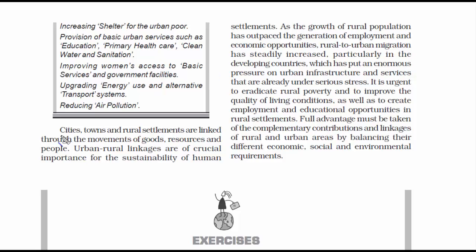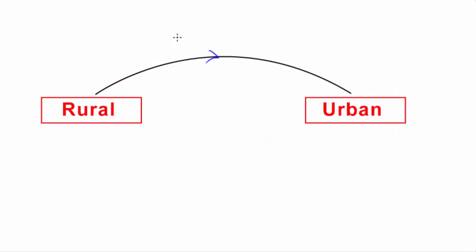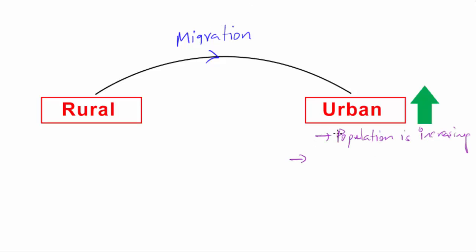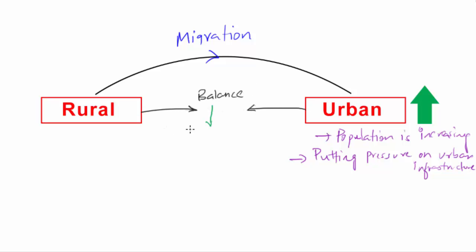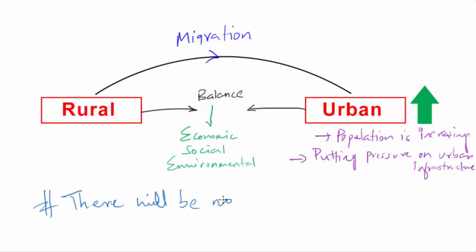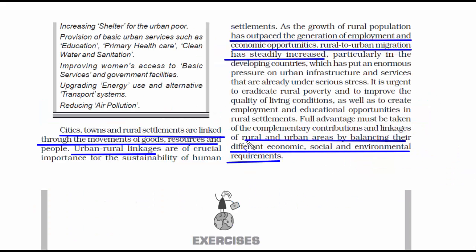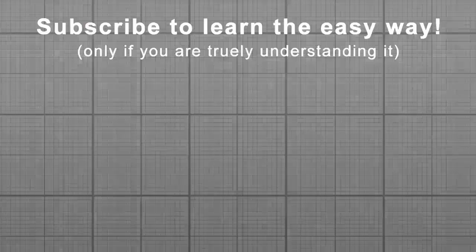In a nutshell, there should be a link between urban and rural settlements for the sustainability of humans, but rural-urban migration is putting enormous pressure on urban infrastructure and services. The only solution is to balance urban and rural settlements and their economic, social, and environmental requirements so as not to create any load on natural resources. With this, we have come to the end of this chapter on Human Settlements. Thanks for watching — if you want more educational content, make sure you are subscribed.